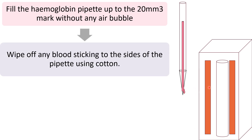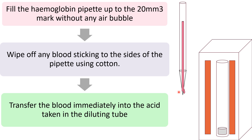Wipe off any blood drops on the outside of the pipette with cotton, because we need exactly 20 mm³ of blood — extra drops will add to the volume. Then immediately transfer the blood into the acid in the diluting tube.